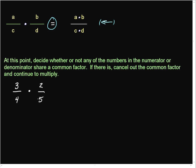Well, 3 is prime and 5 is prime, so they don't share a common factor. 3 and 4 don't share a common factor. Ah, but 2 and 4 do.